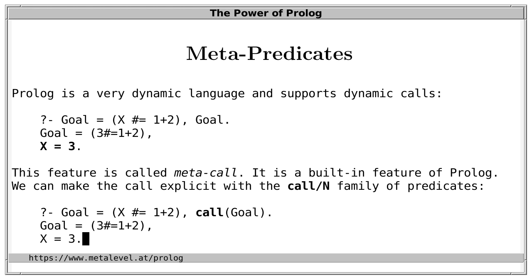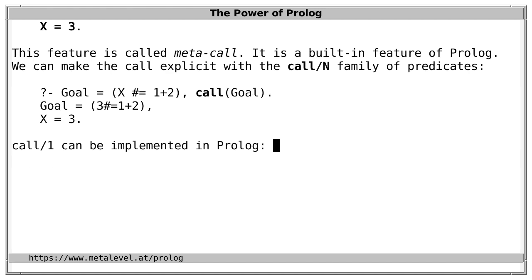The built-in predicate call invokes the goal that is specified in its argument. And in fact if this predicate were not available we could implement it in Prolog by using one clause per predicate where we simply call the predicate that is indicated in the argument. So, this would be a sample definition. And of course that is not how the predicate is actually implemented. But we could do it that way if it weren't available.